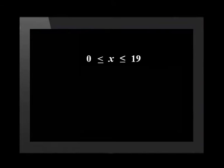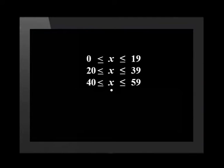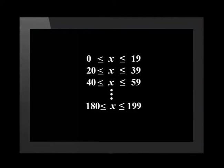Gerard is doing well so far, but before we cross back to him, I want to show you another way to represent intervals. We can use inequalities to represent Gerard's class intervals as: x is greater than or equal to 0 and less than or equal to 19; the second interval is x is greater than or equal to 20 and less than or equal to 39. We continue like this all the way to the last interval, where x is greater than or equal to 180 and less than or equal to 199. Note that we include the end values in the inequality. At this stage, you need to know how to group data into class intervals by using inequalities.